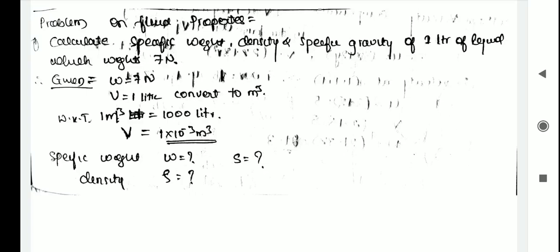Hello students. In this video I am discussing problems on fluid properties — that is specific weight, density, and specific gravity. Let's move on to the first problem: calculate the specific weight, density, and specific gravity of one liter of liquid which weighs seven newton.